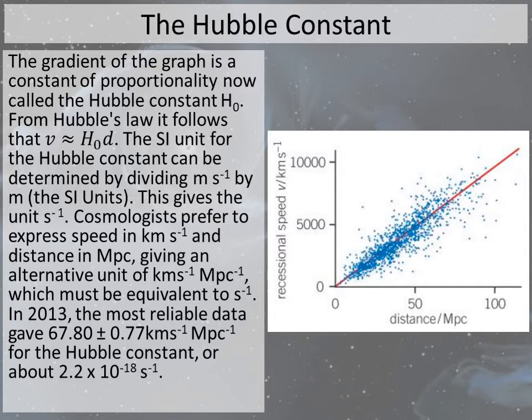That gradient showed that recessional speed was directly proportional to distance from the Earth. Now, the SI units for the Hubble constant can be looked at in two ways. The first is if you treat velocity in metres per second and distance in metres — you cancel out the metres and end up with an SI unit of seconds to the minus one. But remember, when dealing with astrophysics, different units are introduced. Cosmologists prefer to express speed in kilometres per second and distance in megaparsecs, giving a unit of kilometres per second per megaparsec, which must be equivalent in base units to seconds to the minus one.